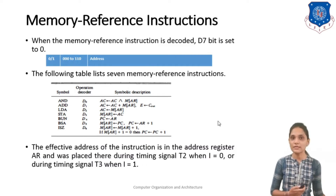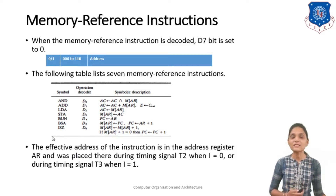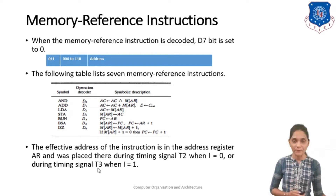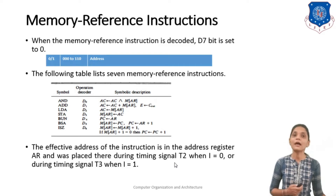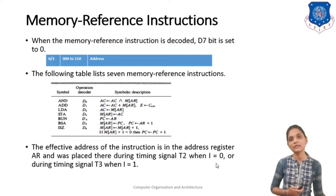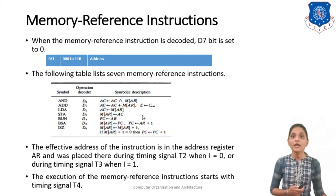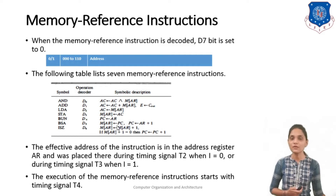The effective address of the instruction is in the Address Register (AR), and it was placed during timing signal T2 when I is 0, or during timing signal T3 when I is 1. If you have used indirect addressing, then the AR register will have the address at T3 timing signal, and if your addressing mode is direct addressing, then AR will contain the address at T2 timing signal. The execution of the memory reference instruction starts from the T3 or T4 timing signal.